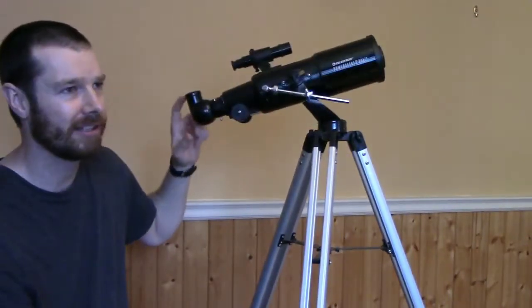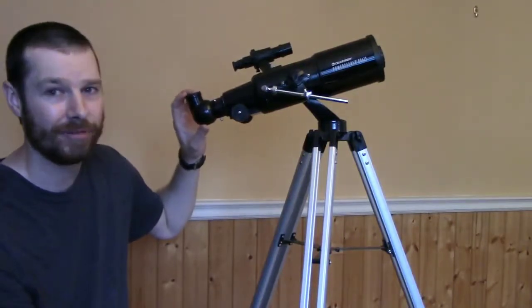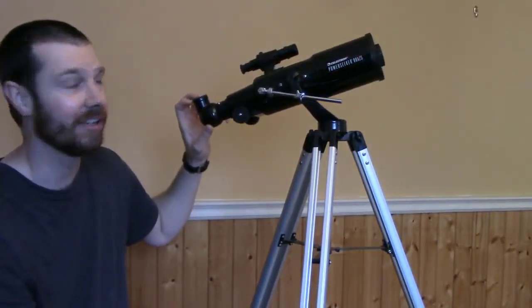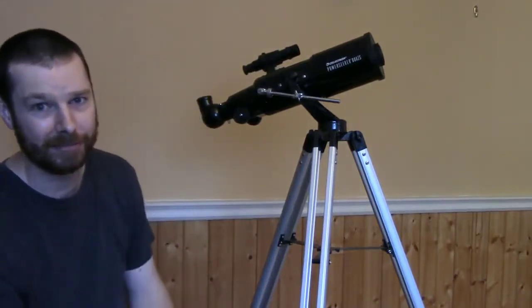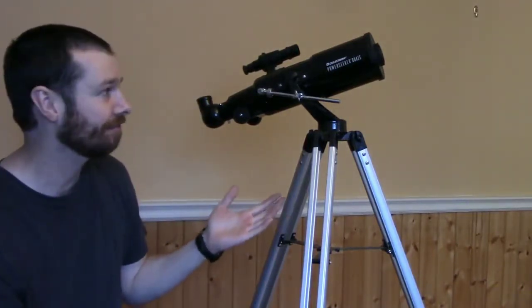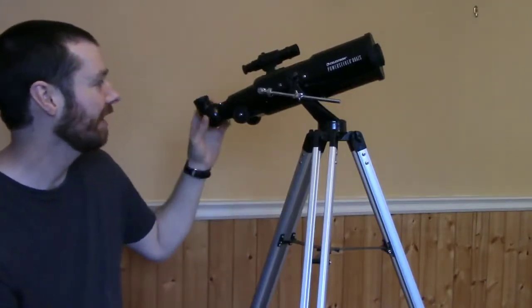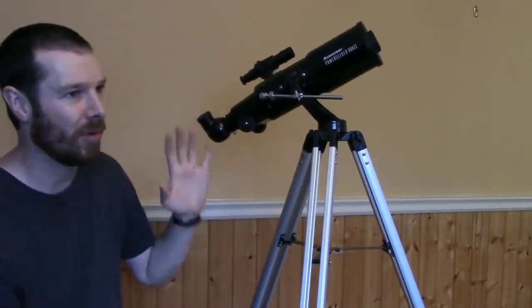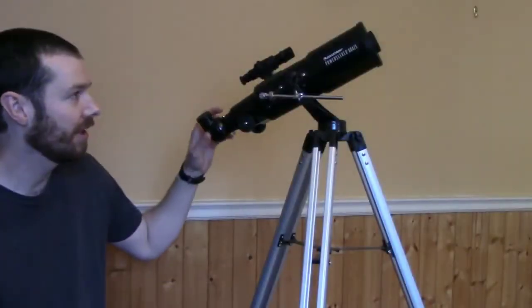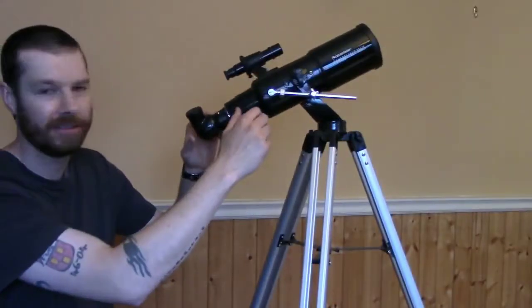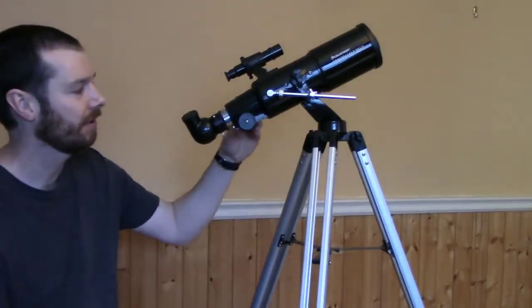So 80 millimeters for a beginning refractor in my opinion is very good. You're going to get a lot of light coming in here, more so than a 50, 60, or 70 millimeter, and it's going to be a wide field of view, which is what you're really looking for.